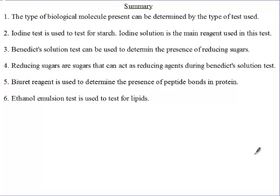The iodine test is for starch as stated earlier. The Benedict solution test is for reducing sugars. Reducing sugars are sugars that can act as reducing agents during the Benedict solution test — they donate electrons. The Biuret test is used to determine the presence of peptide bonds in proteins. And lastly, the ethanol emulsion test is used to detect or to test for lipids.